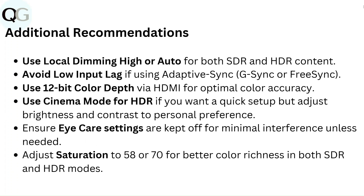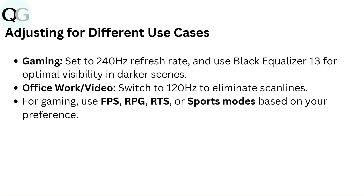Ensure Eye Care Settings are kept off for minimal interference unless needed. Adjust Saturation to 58 or 70 for better color richness in both SDR and HDR modes. For Gaming, set to 240Hz refresh rate and use Black Equalizer 13 for optimal visibility in darker scenes. For Office Work or Video, switch to 120Hz to eliminate scan lines. For Gaming, use FPS, RPG, RTS, or Sports Modes based on your preference.